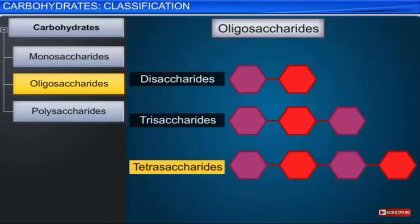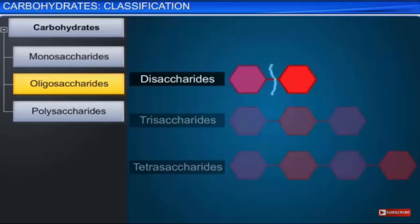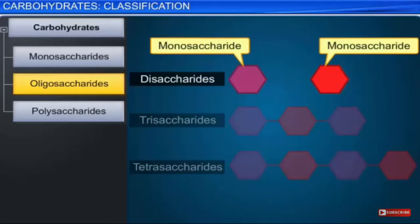Oligosaccharides include disaccharides, trisaccharides, and tetrasaccharides. A disaccharide is made up of two monosaccharide monomers and can be hydrolyzed only once. So disaccharides are made up of two monosaccharides.